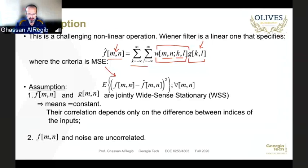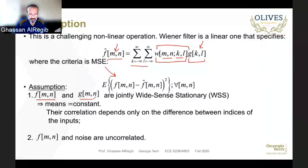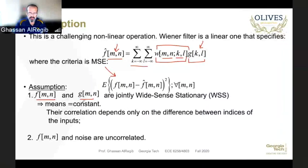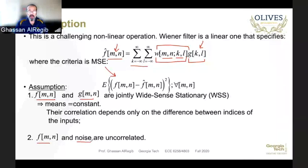Our criterion is again mean square error — we minimize the expected value of (f minus f-hat) squared for all m and n. We have two assumptions: first, the original image f and the observation image g are jointly wide-sense stationary, meaning means are constant and correlations depend only on the difference between indices. Second, the signal f(m,n) and our noise are uncorrelated.